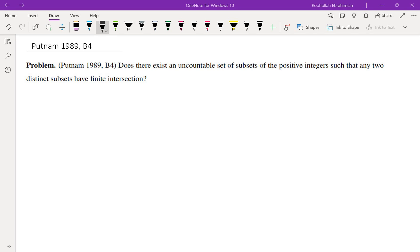Hello, in this video we're going to go over problem B4 from 1989 Putnam. Does there exist an uncountable set of subsets of the positive integers such that any two distinct subsets have finite intersection?